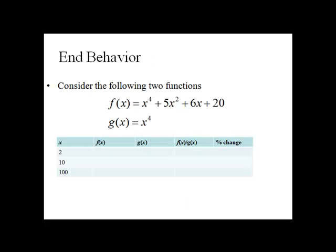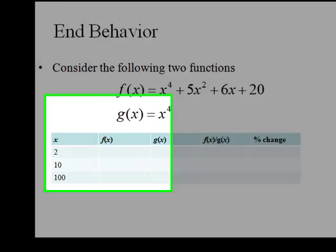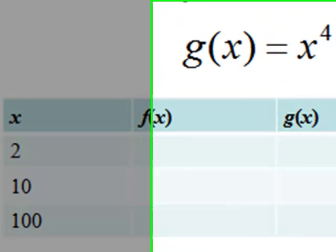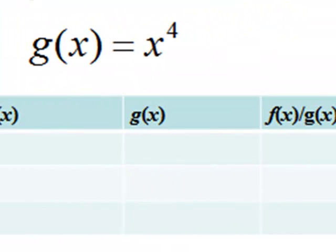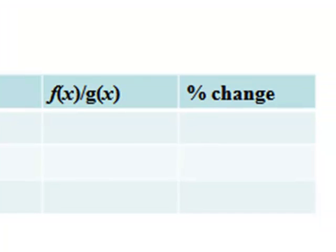Let's see if we can make any generalizations about end behavior. We have two functions here. Both are polynomials. Both are fourth degree. They both have the same lead term. If we look at what's happening with the two functions, I'm going to fill in a table that has the outputs for f, the outputs for g, but then also looks at them relative to each other.